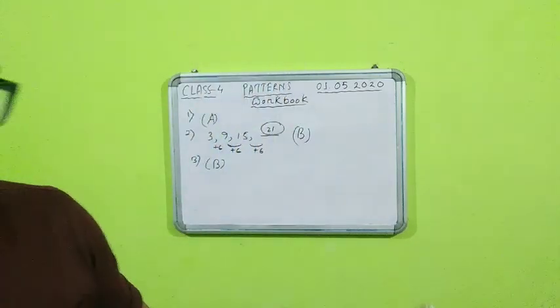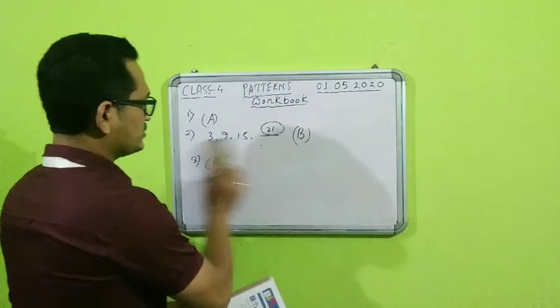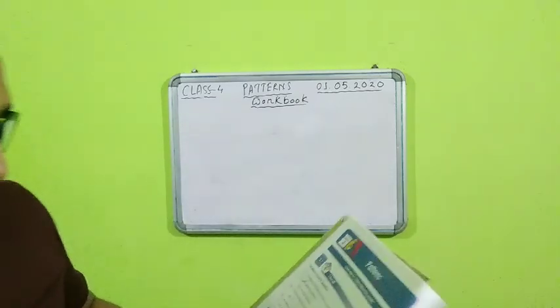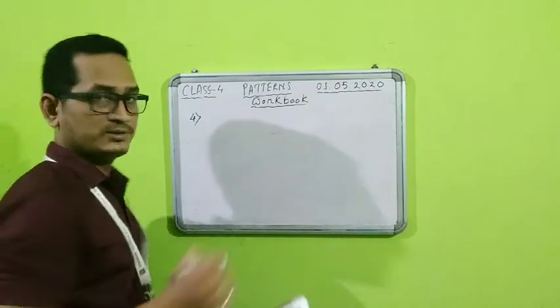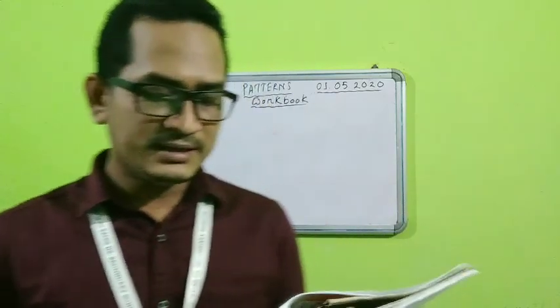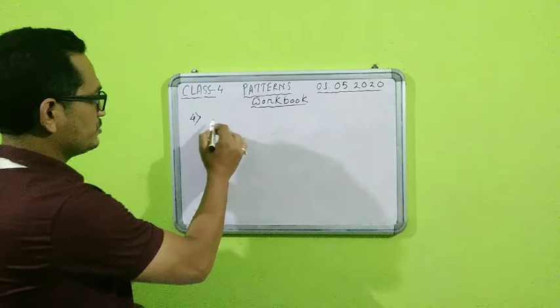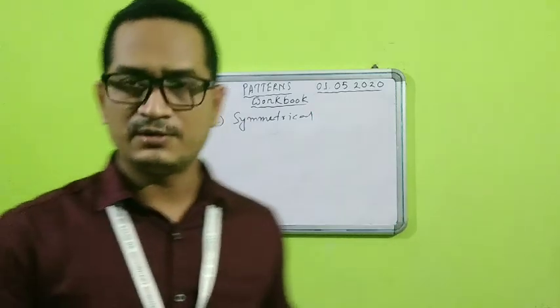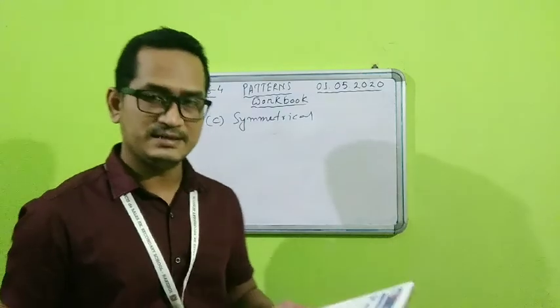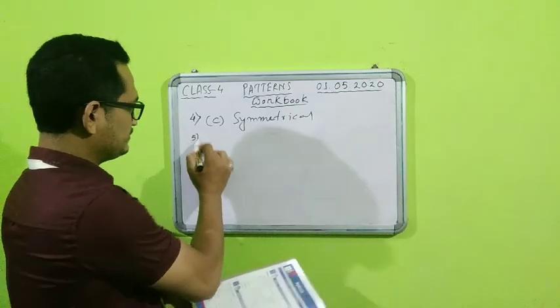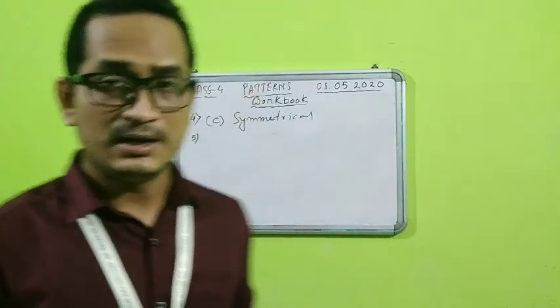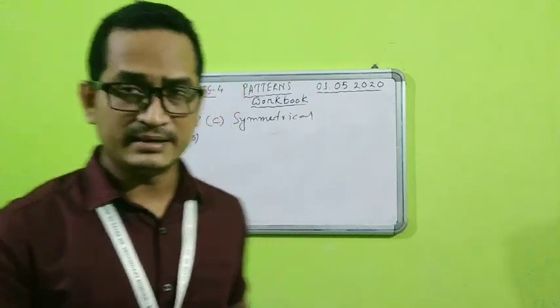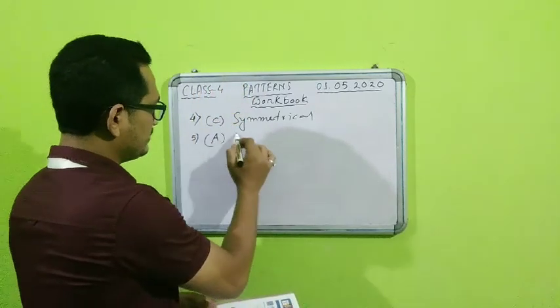Now let us come to the next part — 'I Remember and Understand' section 2.1 multiple choice questions. Question number 4: patterns can be linear, circular, or — the answer is option C — symmetrical. Patterns can also be symmetrical, as we have already seen. Question number 5: patterns that continue endlessly are called blank patterns. Those patterns which are infinite, which are not ending anywhere, the answer is option A — infinite.